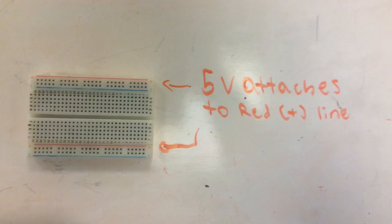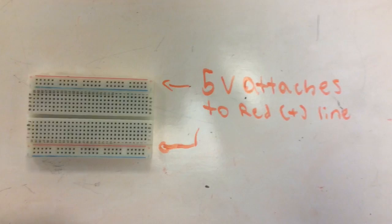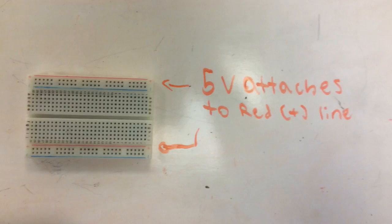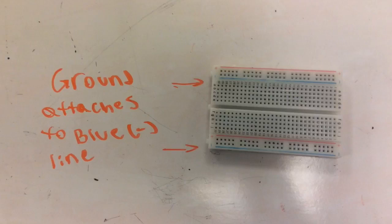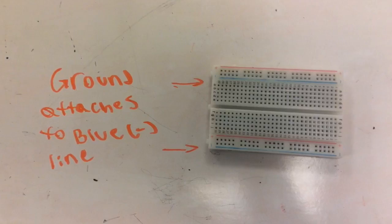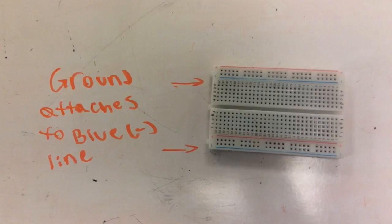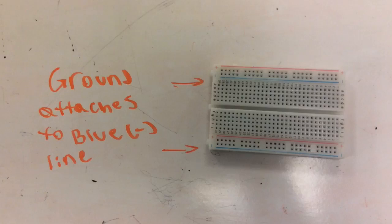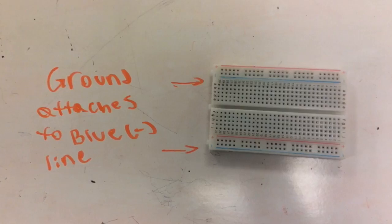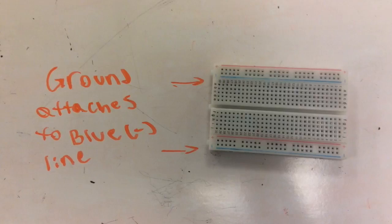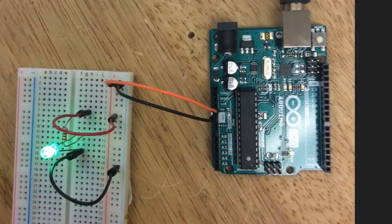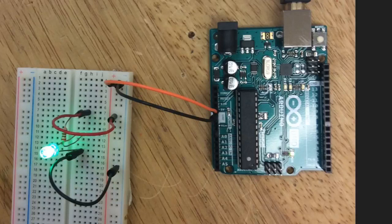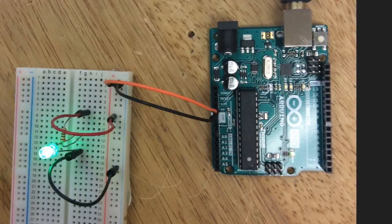The 5V pin on the Arduino should connect to the red plus line to power that whole strip, which will power the board once you connect wires to it. The white box with the letters GND in it should be connected to the blue negative side, and all circuits should end with the wires on there. This is a basic circuit connecting the 5V to the red plus, the ground to the minus, and then wires connecting the plus and minus to where they should go to power the light.